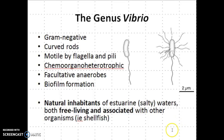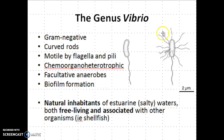The genus Vibrio includes organisms that are bacterial. They are all gram-negative, which tells you something about their cell wall composition. They have curved rods — they're almost like little commas — and they are motile, which means they can move because they have flagella, these long structures here. Many of them also have pili, which help out with motility, attachment, and certain other characteristics like being able to inject toxins.